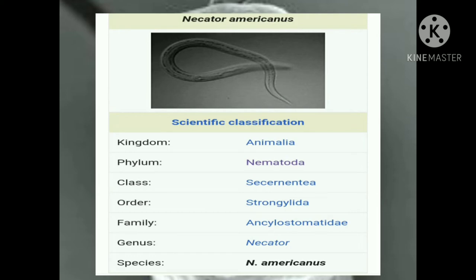So this is the overview of this parasite. It belongs to the Kingdom Animalia, the Phylum Nematoda, the Class Rhabditea, the Order Strongylida, the Family Ancylostomatidae. It is the genus Necator and then the species is Necator americanus.